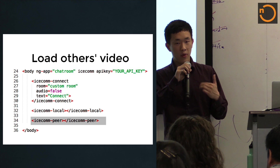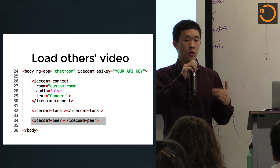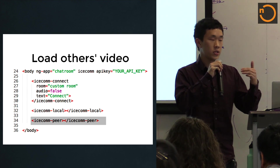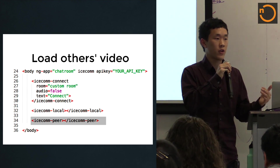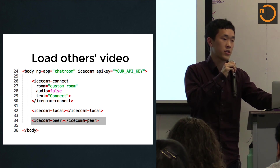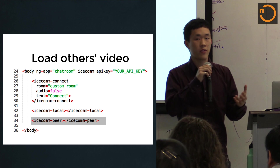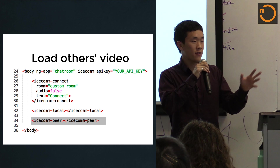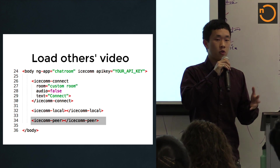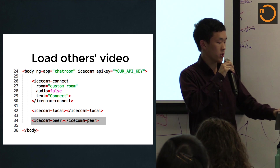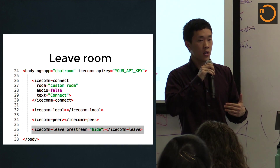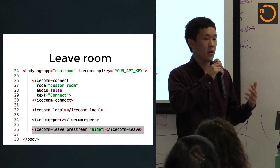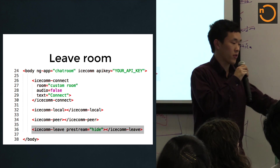The more interesting component is loading other people's videos. There's an Icecom peer directive — assuming someone else is in the room, you specify what you want to do with their video stream, and you can place their video elements where the Icecom peer directive is located. With these three directives you have the ability to render your own video and render other people's videos. There's one last directive to leave the room — when you leave, other people's videos disappear and your video disappears. You can place that button anywhere you want.